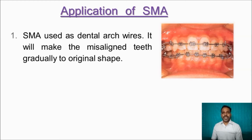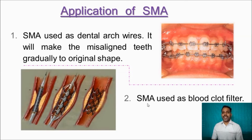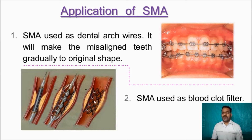Applications of shape memory alloys: SMAs are used as dental arch wire to gradually move misaligned teeth back to their original shape. SMAs are also used as blood clot filters and stents in coronary arteries. Cholesterol occupying inside a coronary artery disturbs blood flow. An SMA stent is fixed at the blocked position; applying stress or a thermal process causes it to expand, clearing the blockage so blood flows freely through the artery.